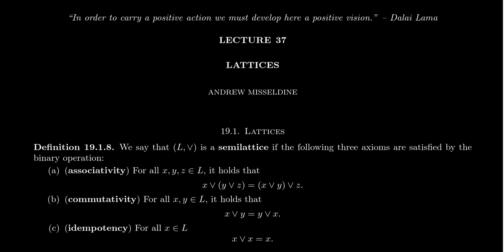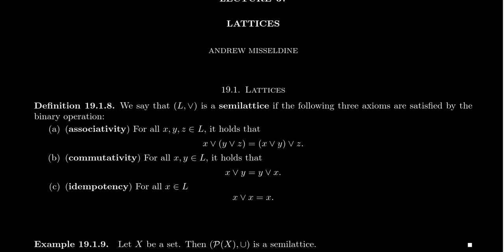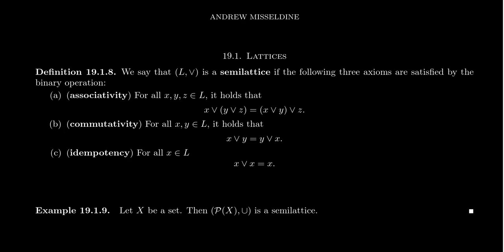The analog of a group in this alternate universe is what we call a semi-lattice. A semi-lattice is a set equipped with a binary operation — you take two elements, combine them together, and produce another element of that same set. It's going to have three axioms, and some of the axioms are going to feel similar. The first axiom is associativity, which is exactly what we took as the first axiom of groups.